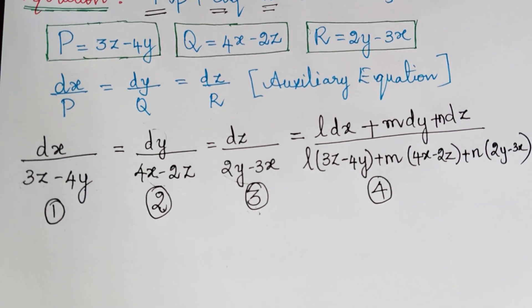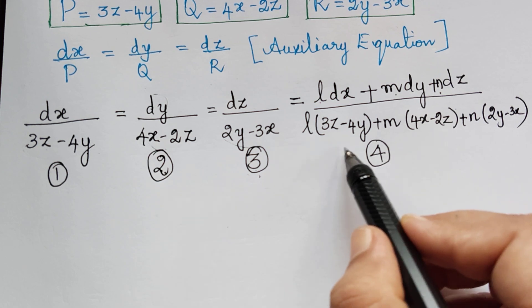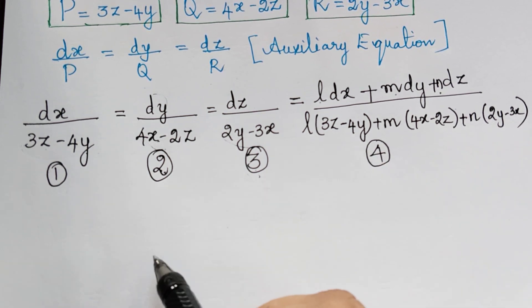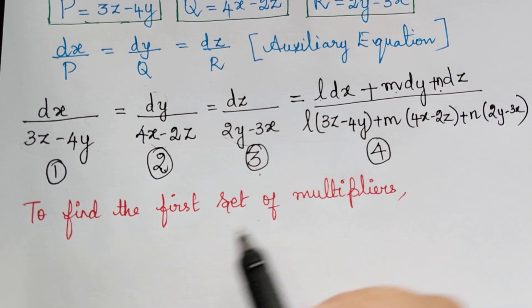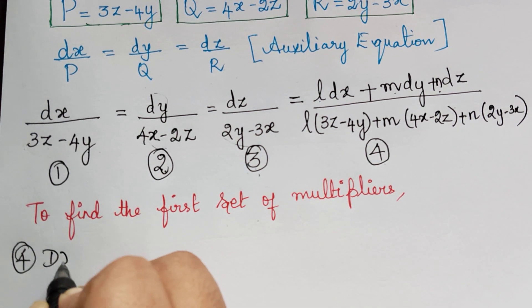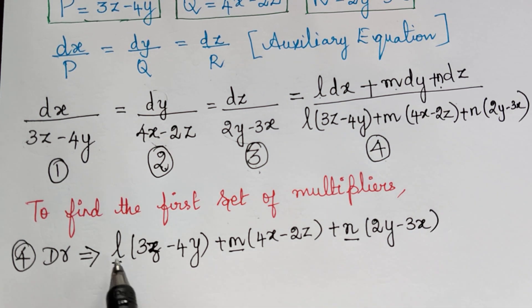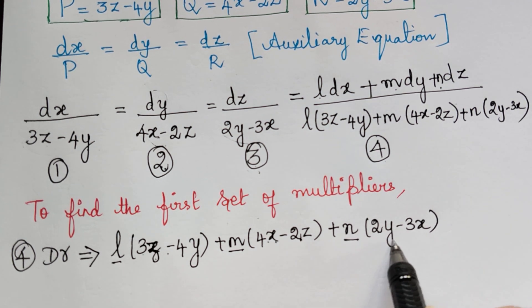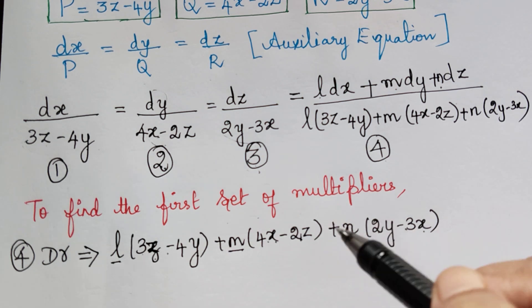To find solutions U and V, we need to find values of L, M, and N such that the denominator of the fourth ratio becomes 0. First, we find the first set of multipliers. Looking at the denominator terms 3z - 4y, 4x - 2z, and 2y - 3x, we observe that x, y, and z appear as factors, giving us the idea to choose multipliers L = x, M = y, and N = z.